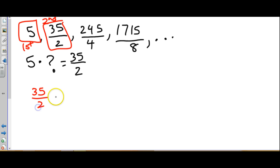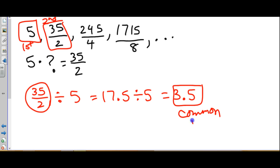If we do 35 over 2 divided by 5, I'm going to make this a decimal first. 35 divided by 2 is 17.5, and then 17.5 divided by 5 is 3.5. So 3.5 is our common ratio.